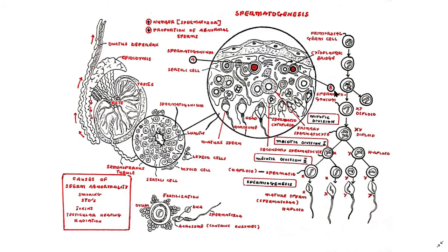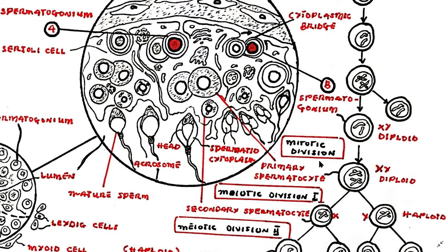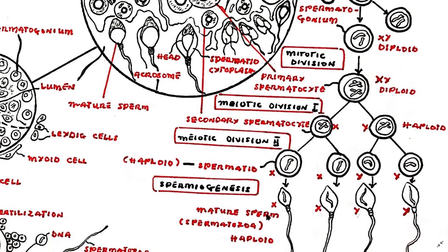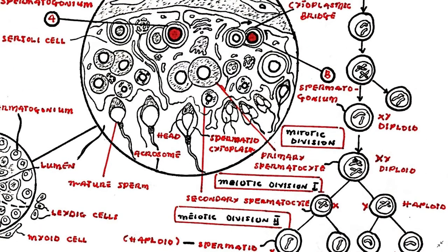Spermatogenesis in males involves the process of meiosis in which spermatogonia in the testes become spermatozoa. Spermatogonia are diploid germ cells in the testes that maintain their numbers by mitosis, maintaining spermatozoa numbers throughout life. Spermatogonia contain both X and Y sex chromosomes.